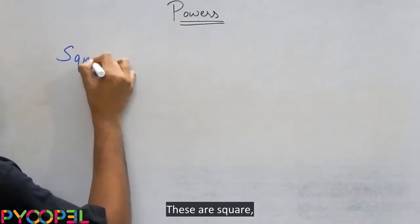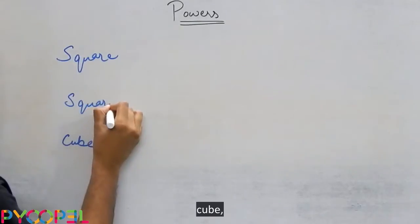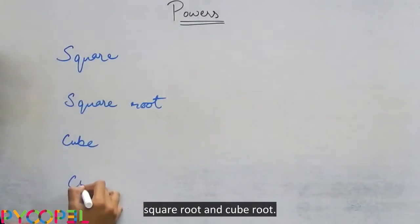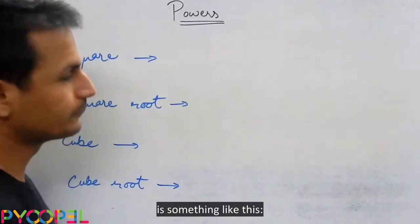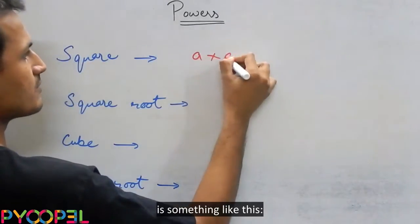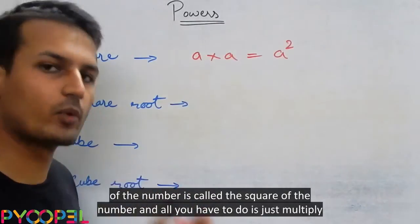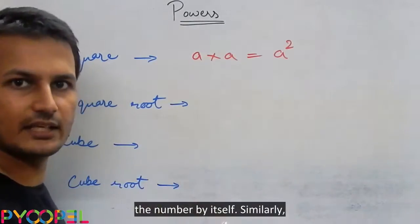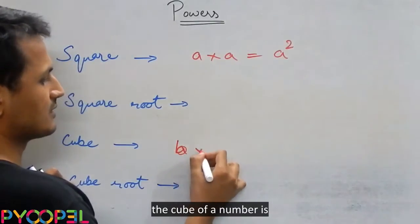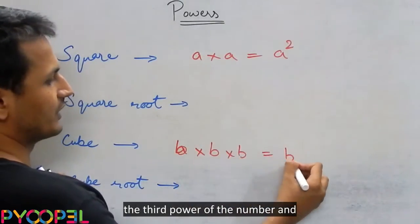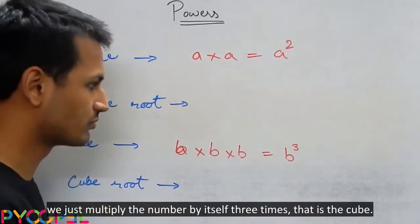These are: square, cube, square root, and cube root. A square of a number is the second power of the number, and all you have to do is multiply the number by itself. Similarly, the cube of a number is the third power of the number, and we just multiply the number by itself three times. That is the cube.